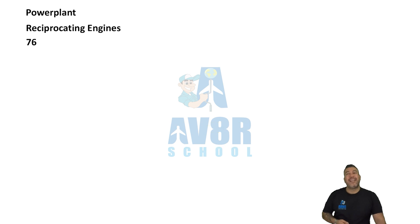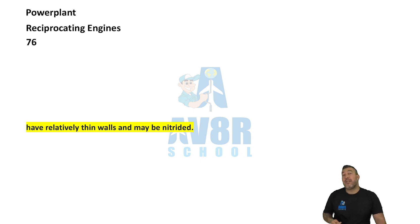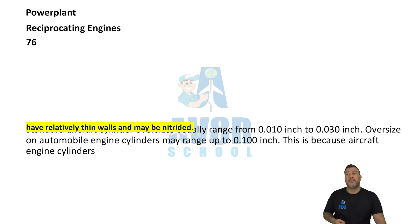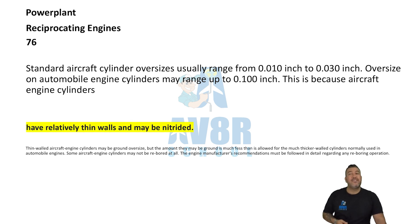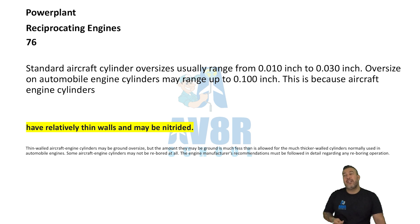Number 76: aircraft engine cylinders have relatively thin walls and may be nitrided. Standard aircraft cylinder oversizes usually range from 0.010 inch to 0.030 inch, while automobile engine cylinders may range up to 0.1 of an inch. This is because aircraft engine cylinders have relatively thin walls and may be nitrided.